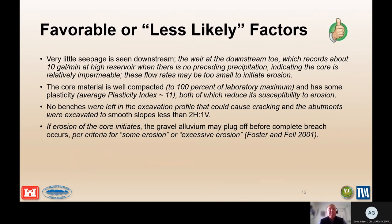Here is an example of favorable factors that make the PFM less likely to occur. The normal text shows how they might be captured on a flip chart, and the italicized text shows how they would be written up in the report. There is no bold text in this example, as the key factors were shown on the previous slide and were weighted towards more likely to occur.